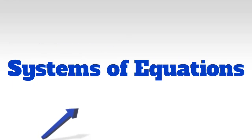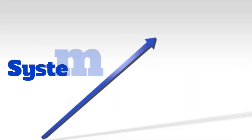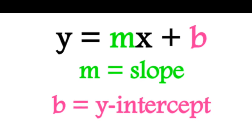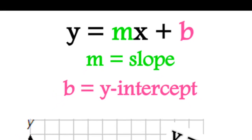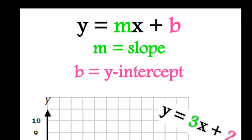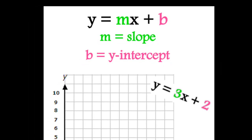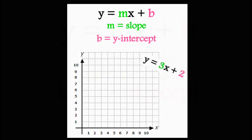Let's talk about systems of equations. Slope-intercept form can be written as y equals mx plus b, where m is my slope and b is my y-intercept. We use this to graph.